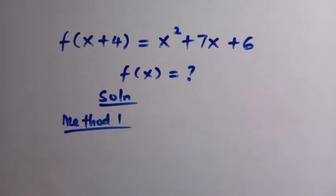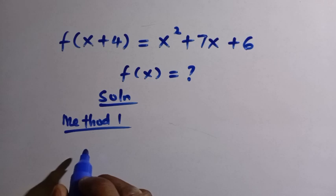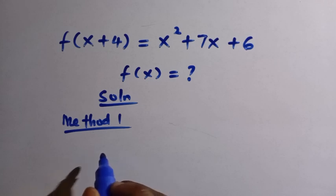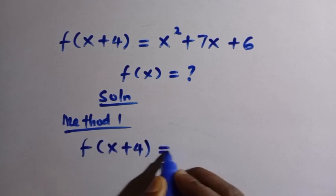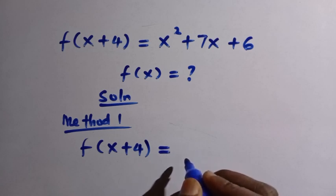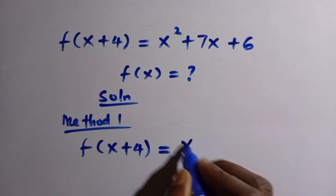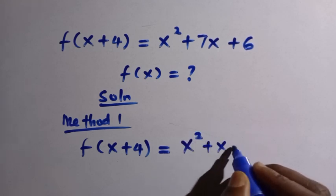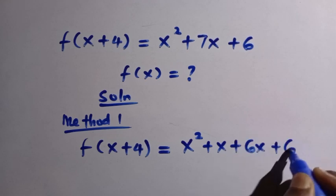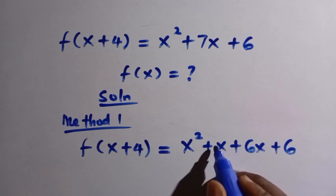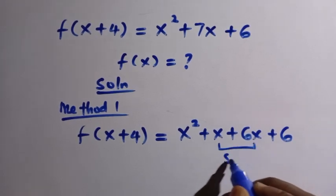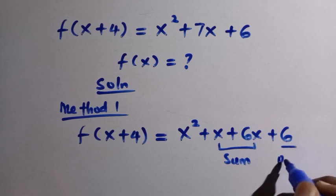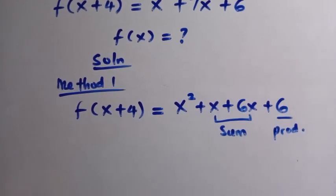For Method 1, we apply form manipulation. Consider the left hand side: f(x+4) equals x squared plus 7x plus 6. We can factorize that. We have x squared plus x plus 6x plus 6, because 1 plus 6 equals 7 (the sum) and 1 times 6 equals 6 (the product).